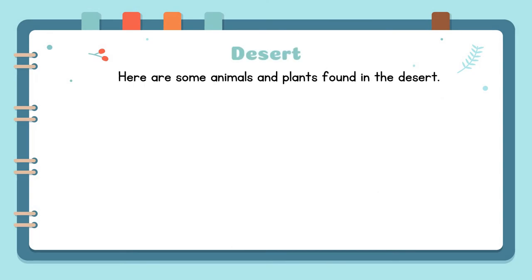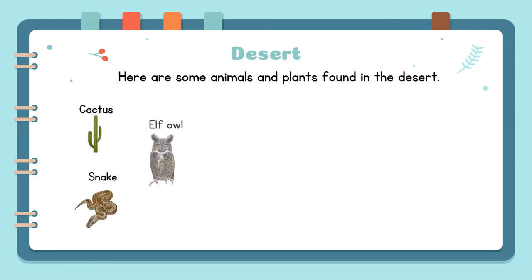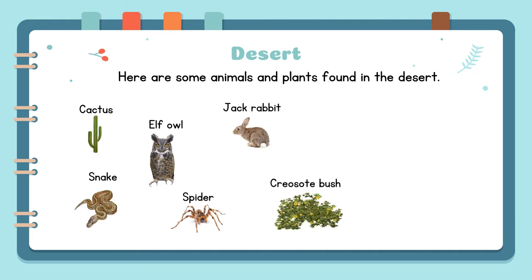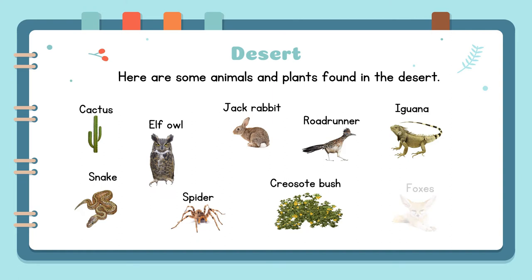Desert. Here are some animals and plants found in the desert: Cactus, Snake, Elf Owl, Spider, Jack Rabbit, Creosote Bush, Road Runner, Iguana, and Fox.